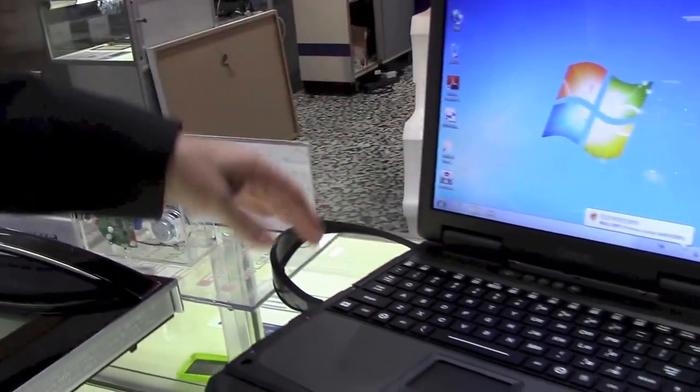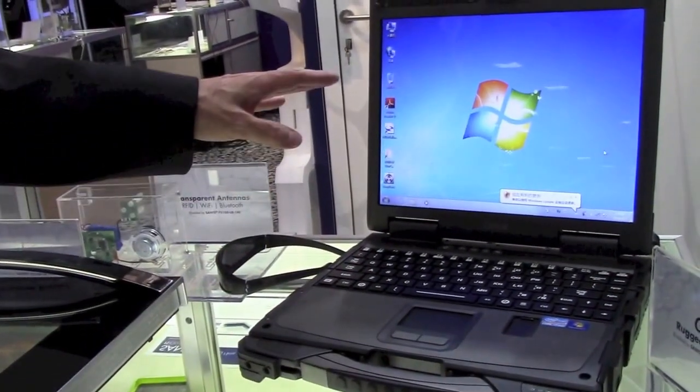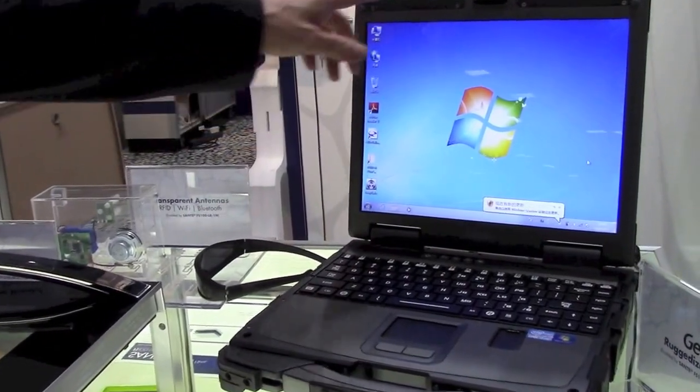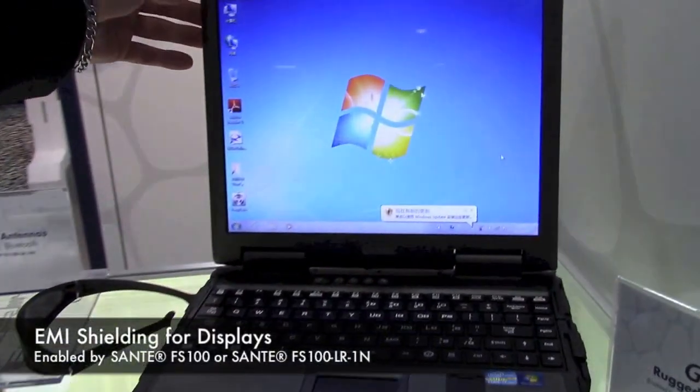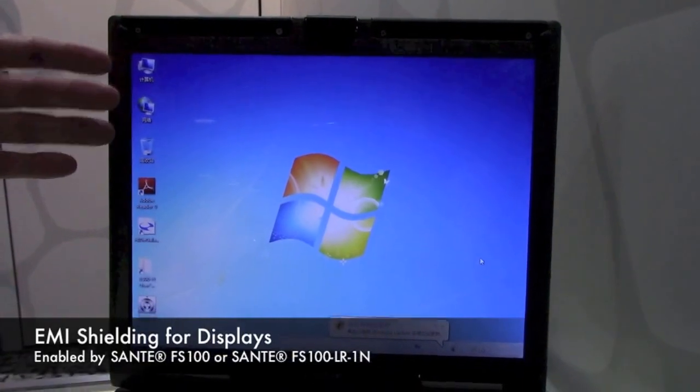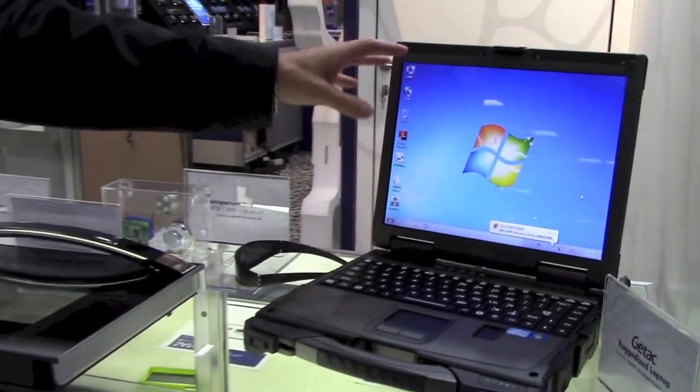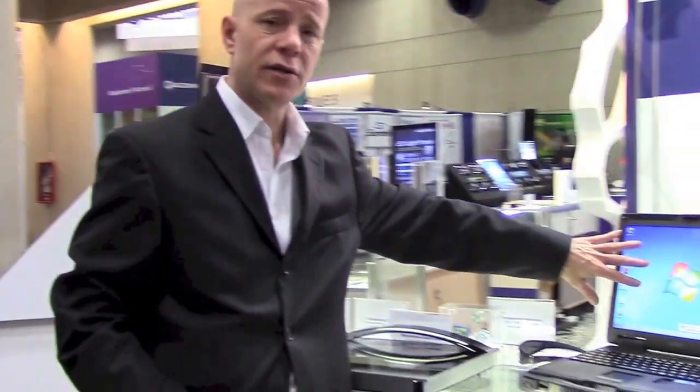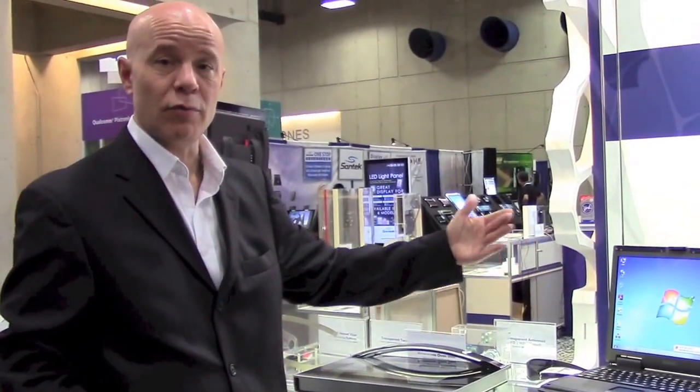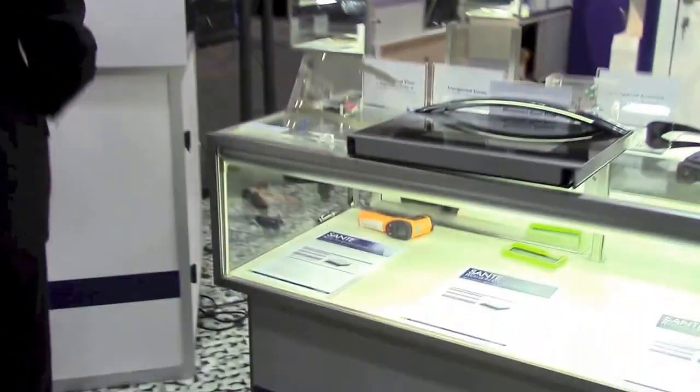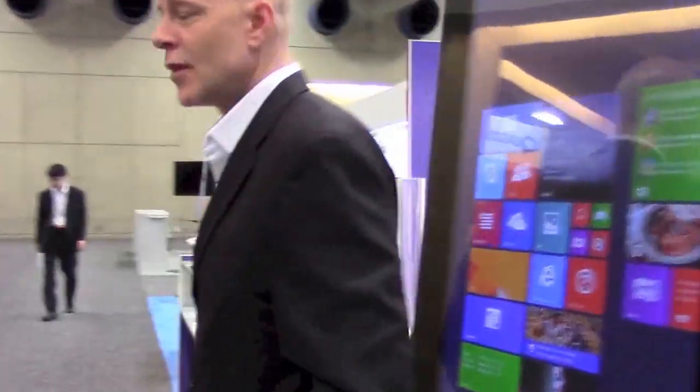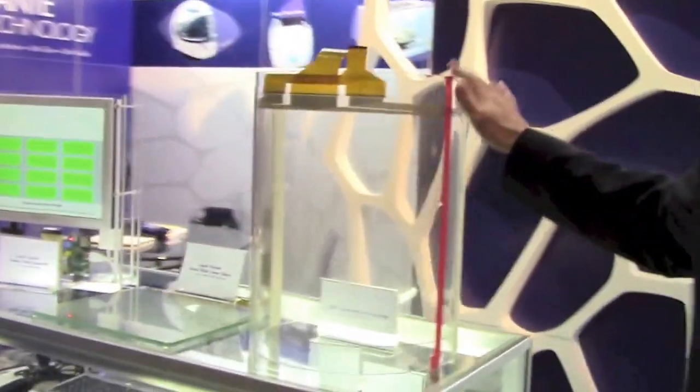So another use for the EMI shielding film, our FS100LR film, is in the shielding of laptop displays. An LCD display will emit some noise, and it's also susceptible to intrusion. So by putting a layer of this mesh over the face of the LCD, it cuts the EMI noise and also blocks for electrical intrusion.